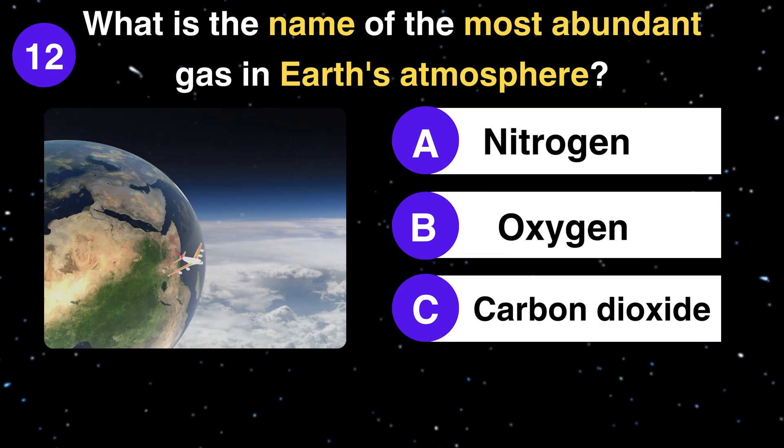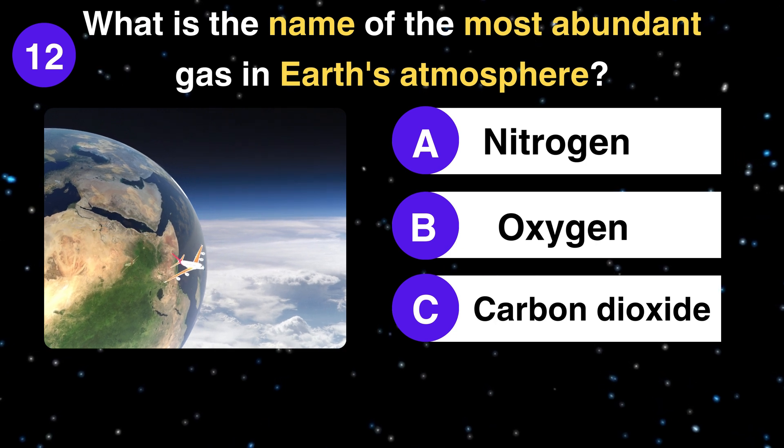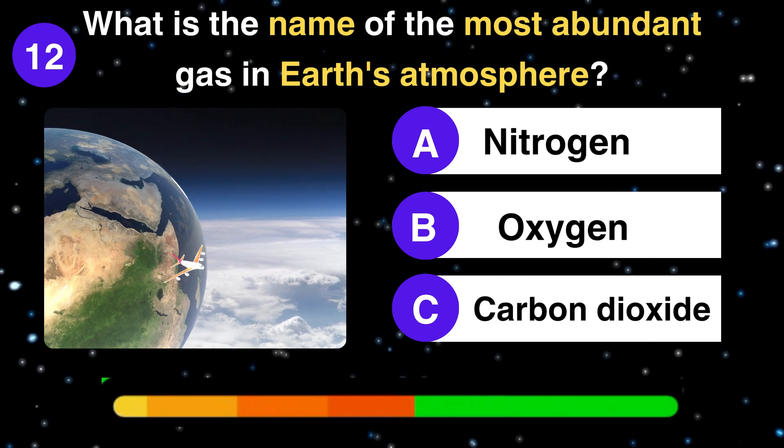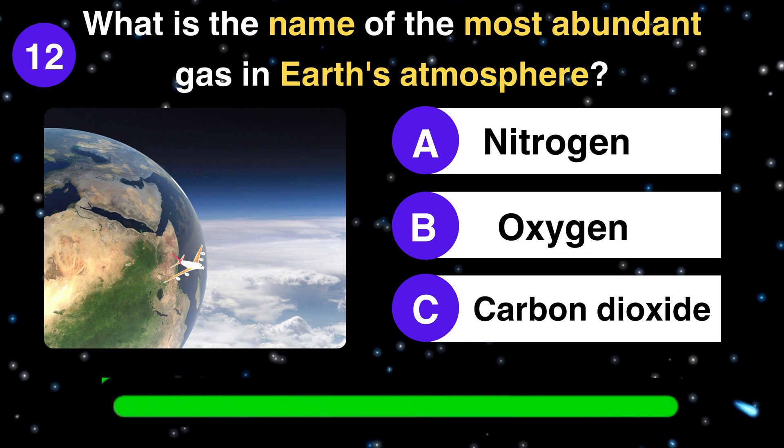What is the name of the most abundant gas in Earth's atmosphere? Nitrogen, oxygen, or carbon dioxide? Nitrogen.